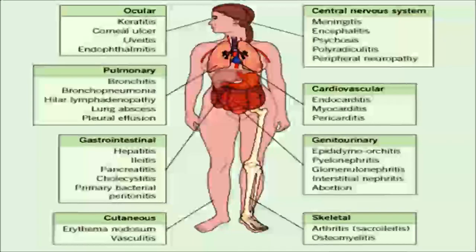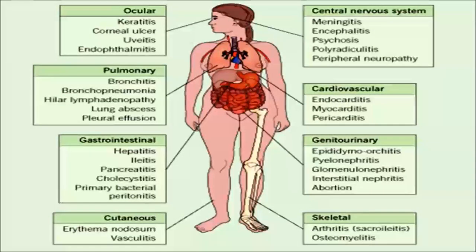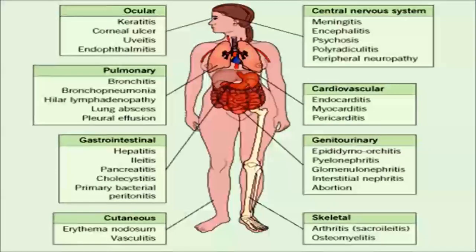The following organ systems and their manifestations are seen in brucellosis: Ocular — keratitis, uveitis, endophthalmitis. Pulmonary — bronchitis, bronchopneumonia, hilar lymphadenopathy, lung abscess, pleural effusion. Gastrointestinal — hepatitis, ileitis, pancreatitis, cholecystitis, primary bacterial peritonitis. Skin — erythema nodosum, vasculitis. CNS — meningitis, encephalitis, psychosis, polyradiculitis, peripheral neuropathy. Cardiovascular — endocarditis, myocarditis, pericarditis. Genitourinary — epididymal orchitis, pyelonephritis, glomerulonephritis, interstitial nephritis, abortion. Skeletal — arthritis and osteomyelitis.